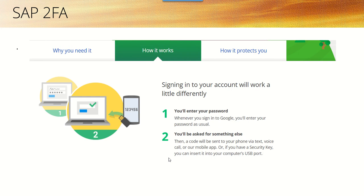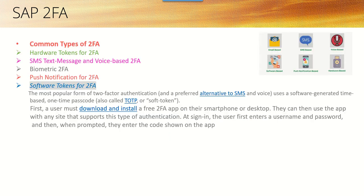A similar concept is available on many other platforms. So what are the common types of two-factor authentication? There are different types available: hardware tokens, which are very old and rarely used nowadays; SMS text and voice-based two-factor authentication; biometric authentication; and push notifications, which we can see in Gmail or in the Amazon application, where you get a push notification on your registered device to approve a sign-in from another device. But among all these, the very popular one is the software token for 2FA.